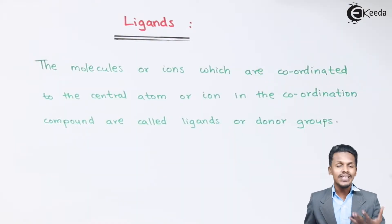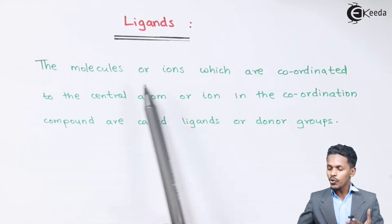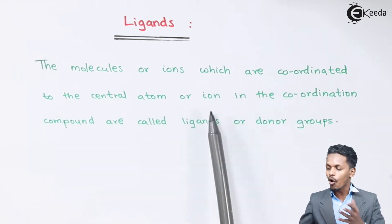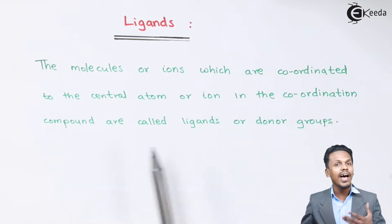So friends, now let us understand what is the meaning of ligand actually. The molecules or ions which are coordinated to the central atom or ion in the coordination compound are called ligands or known as donor groups.